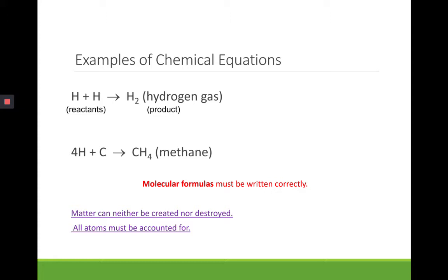Matter can neither be created nor destroyed, so all atoms must be accounted for, and so we must have the same number of atoms on the left as we do with the right, so we have to have the same amount of stuff for the reactants as we do for the products.